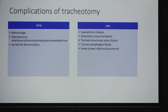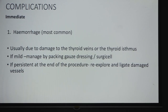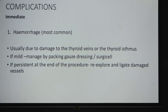Coming to complications: early complications include hemorrhage, subcutaneous emphysema, and accidental decannulation. Late complications include suprastomal collapse, granulation tissue, tracheo-innominate artery fistula, tracheoesophageal fistula, and pneumonia. Hemorrhage is the most common early complication, usually due to damage to the thyroid vein or thyroid isthmus — bipolar cautery is helpful. If mild bleeding persists after the procedure, manage with gauze dressing or Surgicel; if persistent, re-exploration may be necessary.